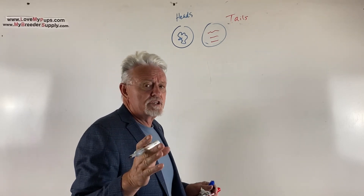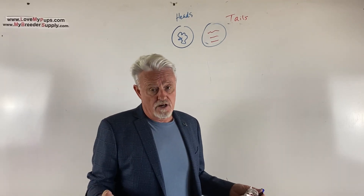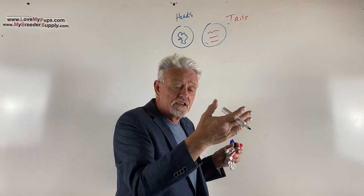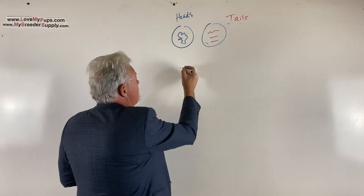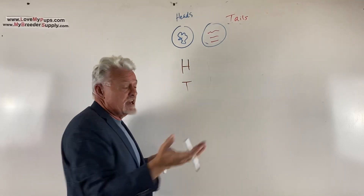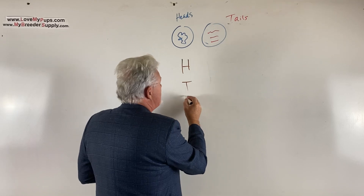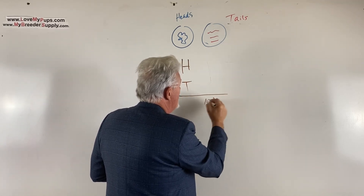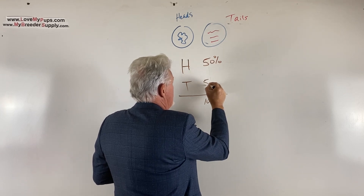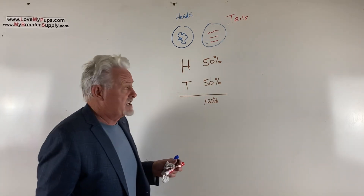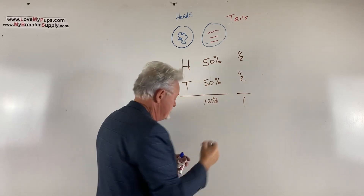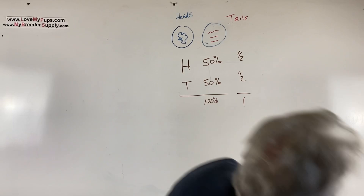What you always do with probability is work out all the possible outcomes — that totals 100% — and then look at how many versions of those outcomes give you the result you want. If you flip a coin, you can get a head or a tail, those are the two outcomes. Since it's a fair coin, 50% of the time you'd expect a head and 50% a tail. That's a probability of one half, or 50%, and it all adds up to one, or 100%.